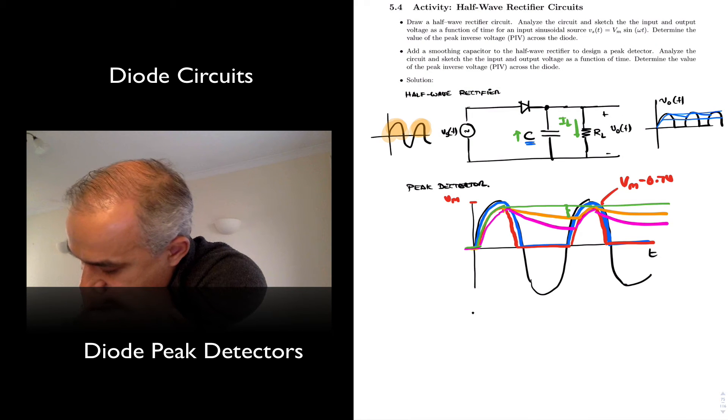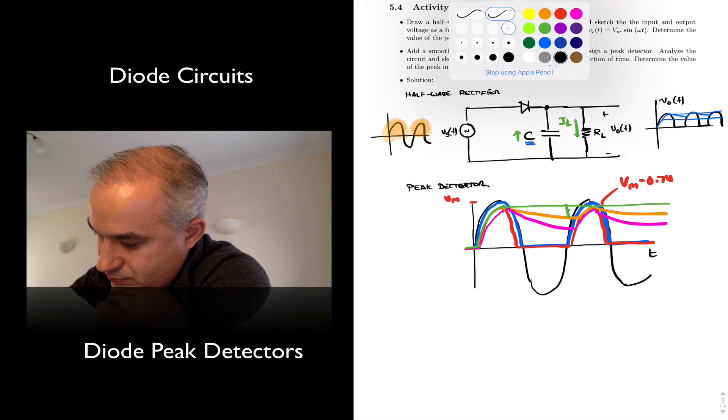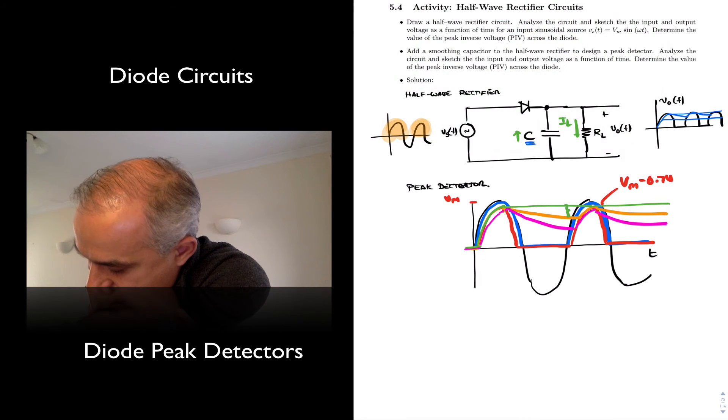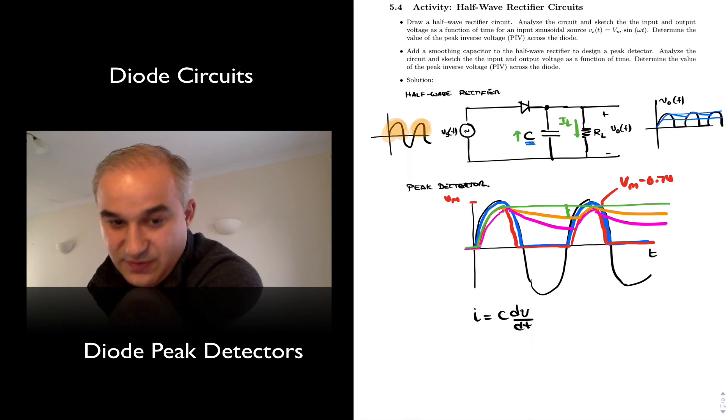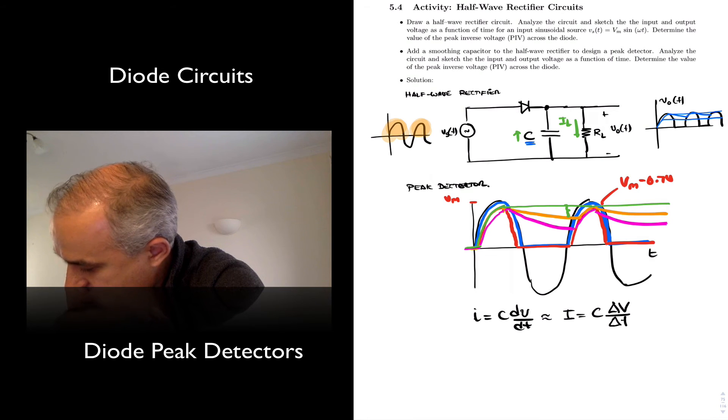So you can say, the current voltage characteristics of a capacitor I is equal to C dV/dT, right? The capacitor. Or you can approximate this as that the current is capacitor's rate of change of the voltage over the rate of change, time.